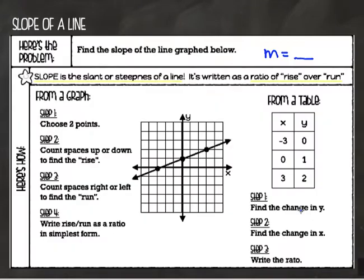Moving back to our example, this one has a positive slope, so I know all the numbers in my slope are going to be positive. Now I want to choose two points. I can choose two points that are close together or farther apart — it doesn't matter, I'm always going to get the same slope. Let me start with two that are farther apart, though I'd normally start with points that are close together, and I'll explain why in a second.